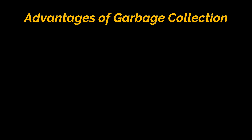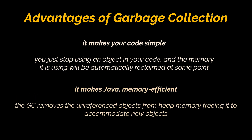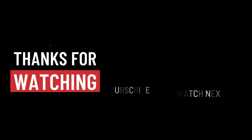In the last section, let's discuss a couple of advantages of garbage collection in Java. First, it makes your code simpler — you don't have to worry about proper memory assignment and release cycles; you just stop using an object and the memory it uses will be automatically reclaimed. Additionally, it makes Java memory efficient because the garbage collector removes unreferenced objects from heap memory, freeing it to accommodate new objects. While some programmers argue in favor of manual memory management, garbage collection is now a standard component of many popular programming languages.